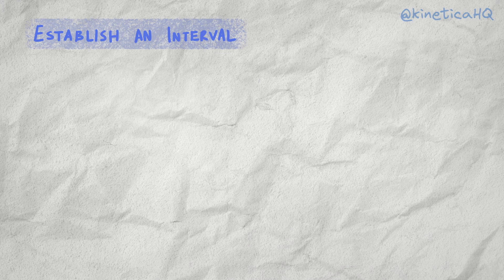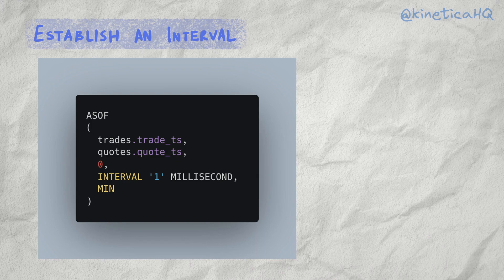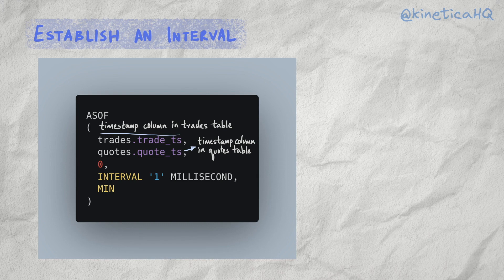Now let's look at the same problem with an as-of join. The basic idea is to establish an interval within which to look for matching values on the right side table. A sample query using Kinetica looks like the following. The first argument is the column in the left side table used for identifying matching records in the right side table — for us this is the trades_TS column, which records the timestamp for the trades data. The second argument is the corresponding column in the right side table, which is quote_TS. The next argument specifies the start of the interval within which to search for matches in the right side column. Zero indicates that the interval will start exactly at the timestamp value in the trades table.